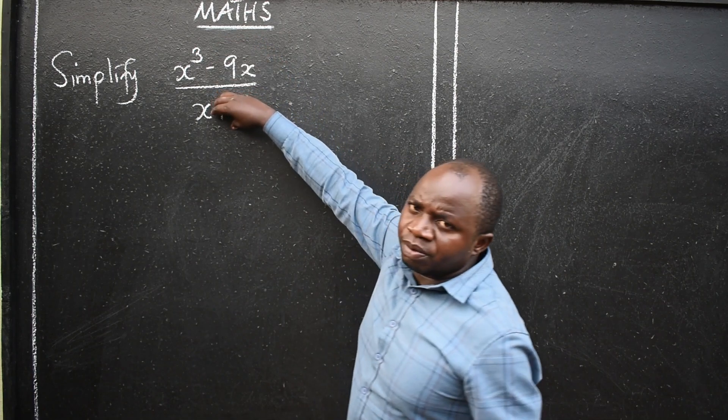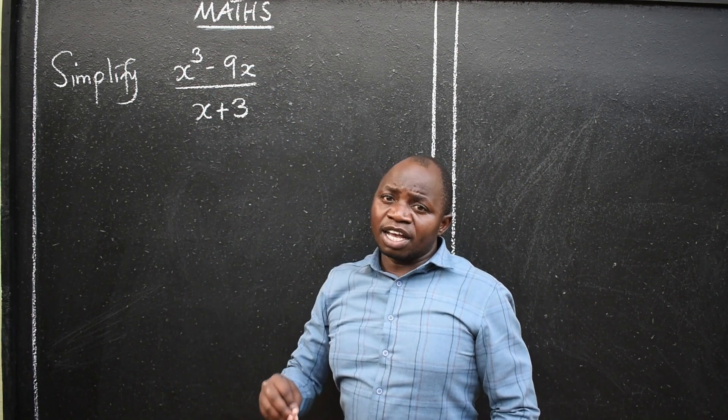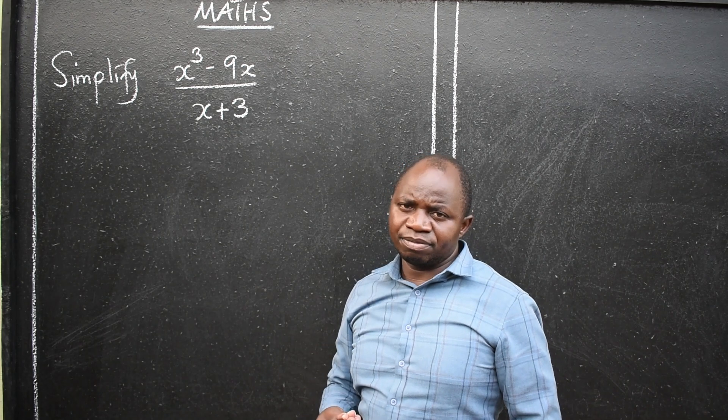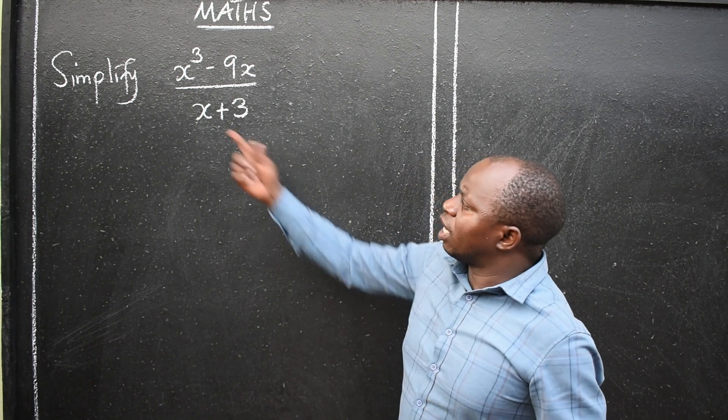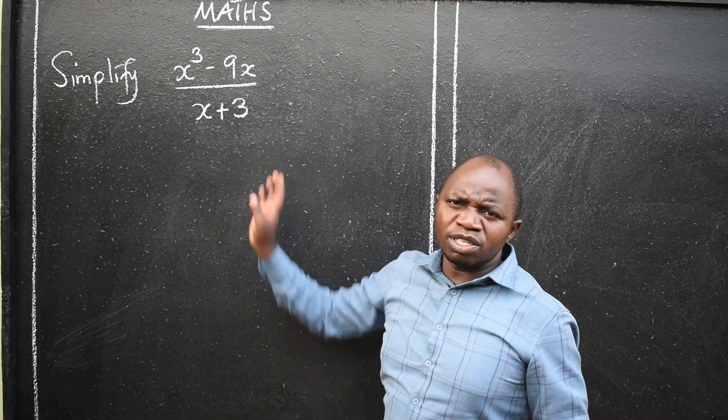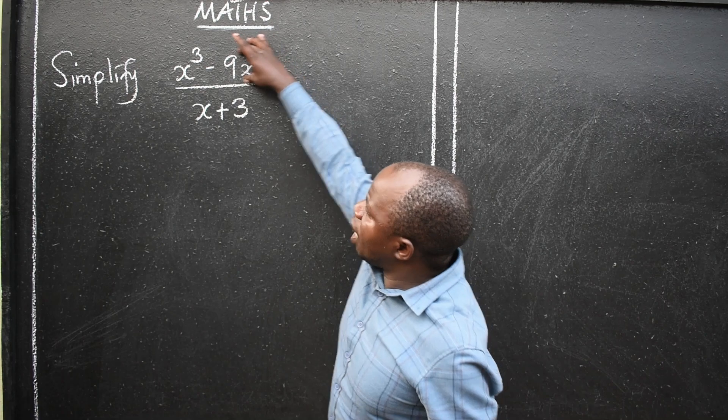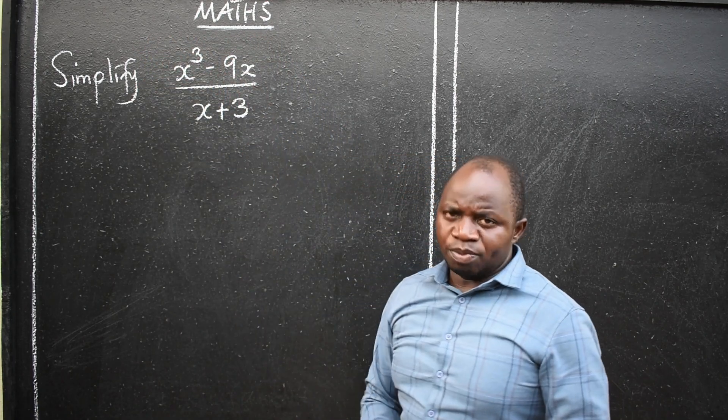Look at the two and tell me which one do you think can be simplified. Can we simplify the denominator here? x plus 3. Can you simplify that? No. It means your concentration will now be on your numerator.